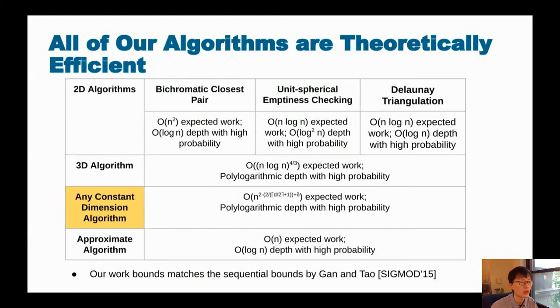Here's a summary of our parallel algorithms. We designed parallel algorithms for exact DBSCAN that work in two dimensions, three dimensions, as well as any constant dimensions. We also designed parallel algorithms for approximate DBSCAN. Note that the work bound of all parallel algorithms matches that of the best sequential counterparts. And when that happens, we say that the algorithm is work efficient. We will focus on the algorithm highlighted in yellow, which is the exact DBSCAN algorithm that works in any constant dimension, because it works the best in practice.